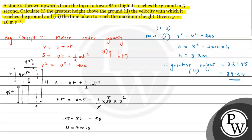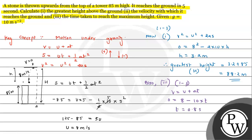For the third part, we need the time taken to reach the maximum height. Applying the first equation of motion between points 1 and 3: v = u + at. At maximum height, v = 0; u = 8 m/s; a = −10. So 0 = 8 − 10t, giving t = 0.8 seconds. The time to reach maximum height is 0.8 seconds.